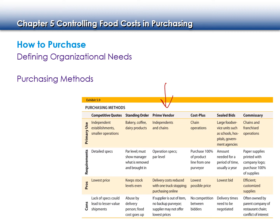The first one is prime vendor. When I worked at the Acadia Institute of Oceanography, I primarily used the prime vendor Performance Food Group — a company similar to Cisco and Benny Keith. I ordered about 95% of my product from Performance Food Group.